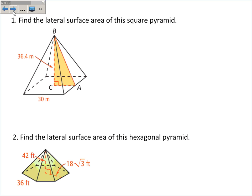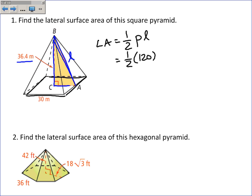To find the lateral surface area of this square pyramid, we know that the lateral area is equal to one-half PL. One-half, the perimeter of the base is 30 plus 30 plus 30 plus 30, or 120. But the lateral surface area, we're not given. It's this length right here, that's L. But we're not given L. But we do have this length, it's 36.4. And this length down here is half of 30, so it must be 15.